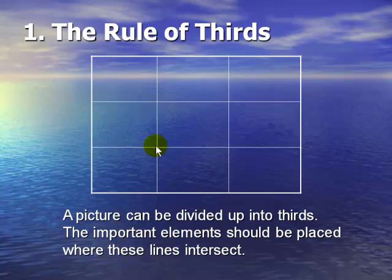Where the lines intersect is generally where you like to put things that are important — like someone's face, or a particular flower, whatever it is you're taking a picture of. Now, this is only a rule, a guide, so it's not hard and fast. There are many times you have to bend or break any of the rules I'm about to explain, but it's good to understand why we do this.